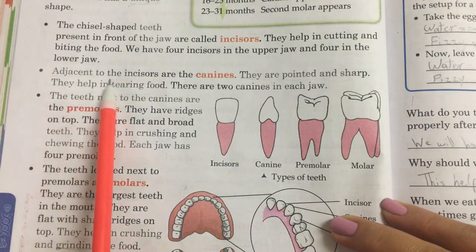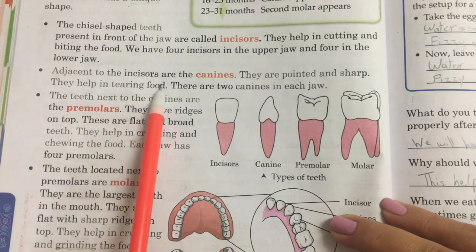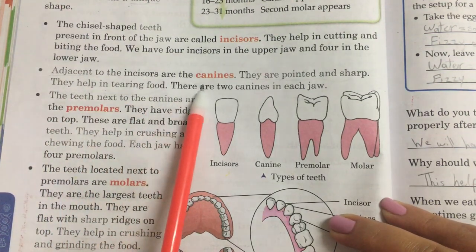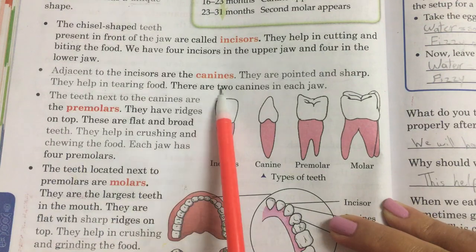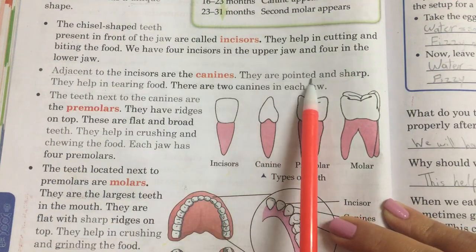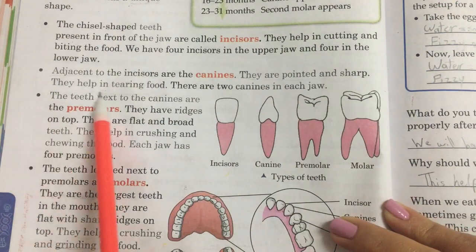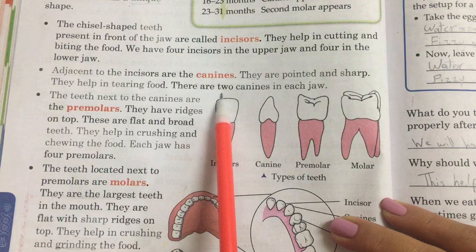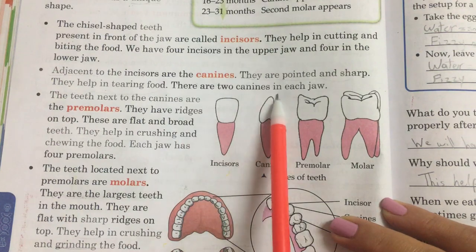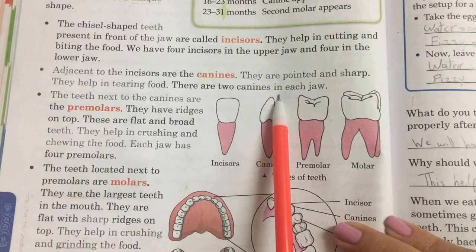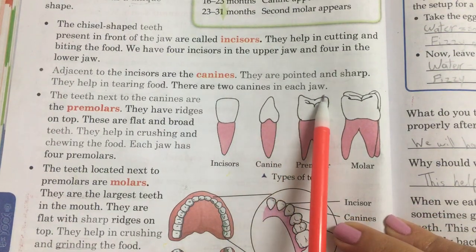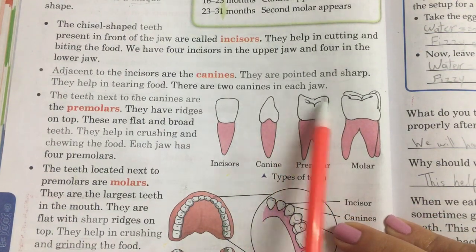Adjacent to the incisors are the canines. They are pointed and sharp. They help in tearing food. There are two canines in each jaw.